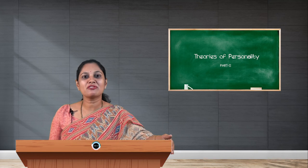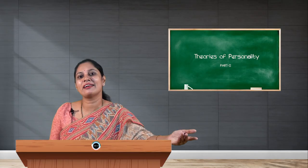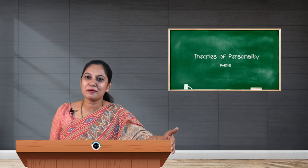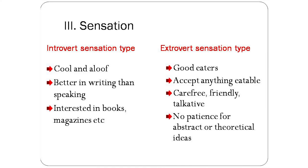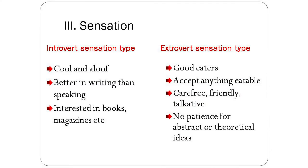The third part of the mental structure is sensation type — introvert sensation type and extrovert sensation type. Introvert sensation type people are cool, very aloof, not friendly, and never communicate; they lack oratory skills and are better at writing than speaking. They are interested in books and magazines, read a lot, and are always reliant on theories. Extrovert sensation people are very good eaters and will eat anything edible. They are very carefree, very friendly, and very talkative in nature, but they have no patience for abstract or theoretical ideas — they just want the facts.